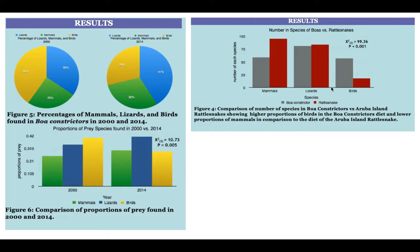Over here, this compares what the boa constrictor eats in gray to what the rattlesnake eats in red. We can see the rattlesnake eats a few more mammals, they eat about the same amount of lizards, and the rattlesnake eats fewer birds. So overall, one of the major reasons that the boa constrictor is considered so invasive and so bad for native endangered species is because it's eating all of the food that the native species would normally eat.